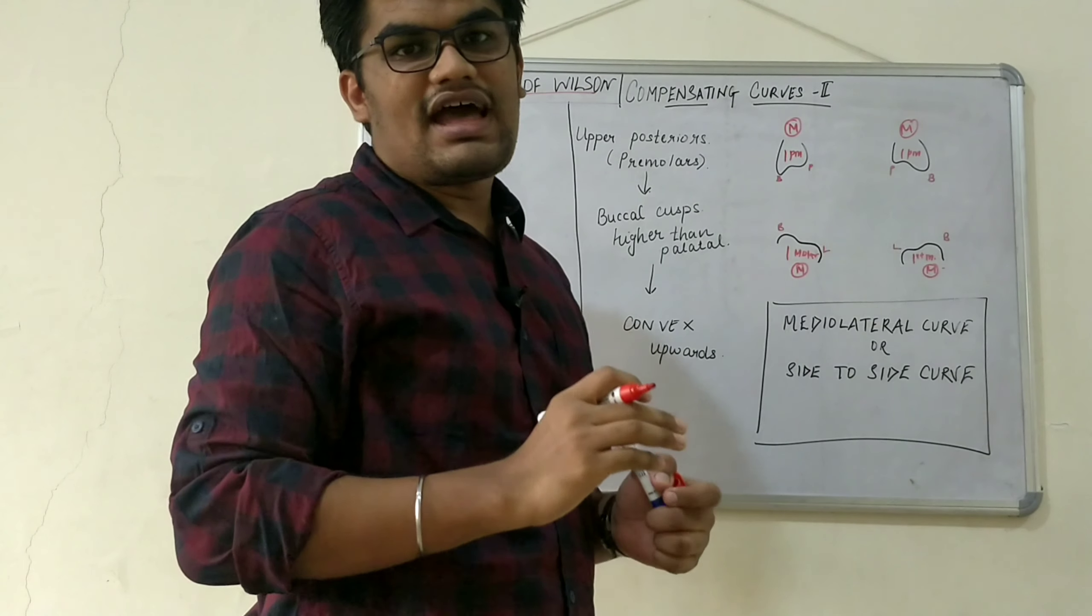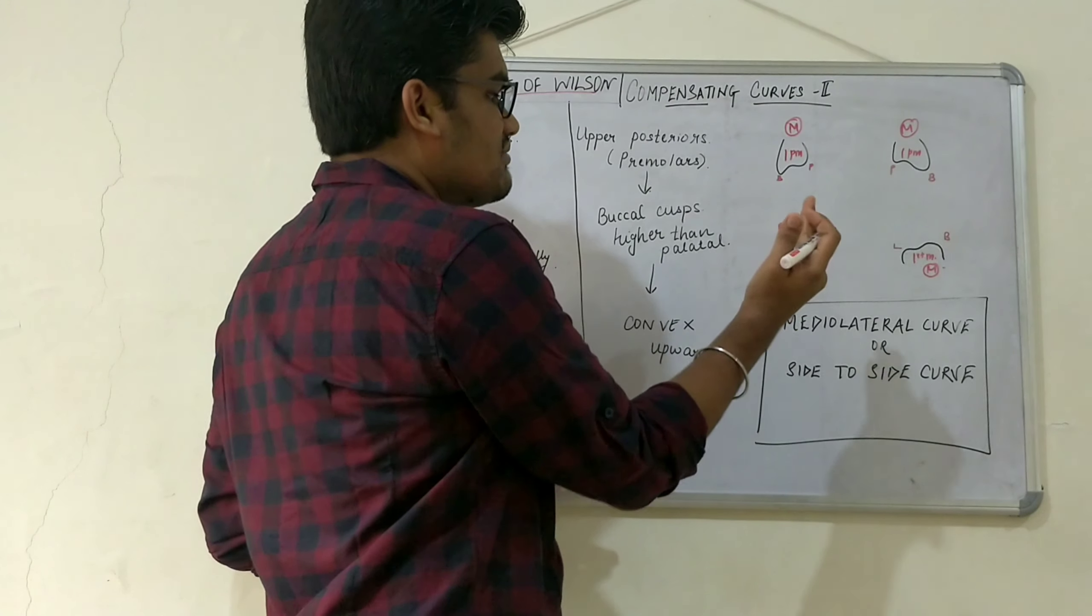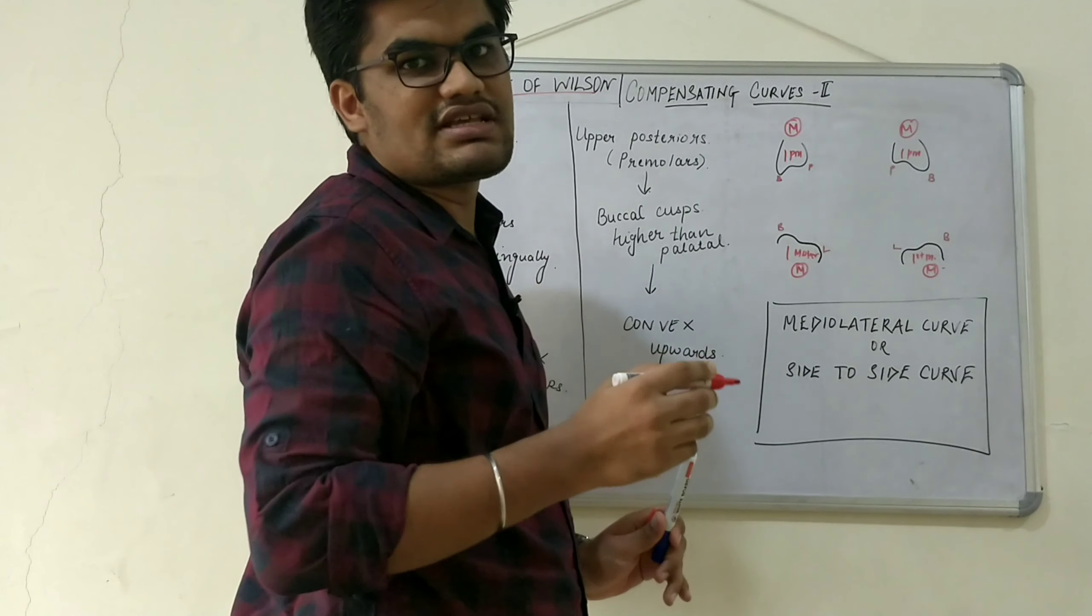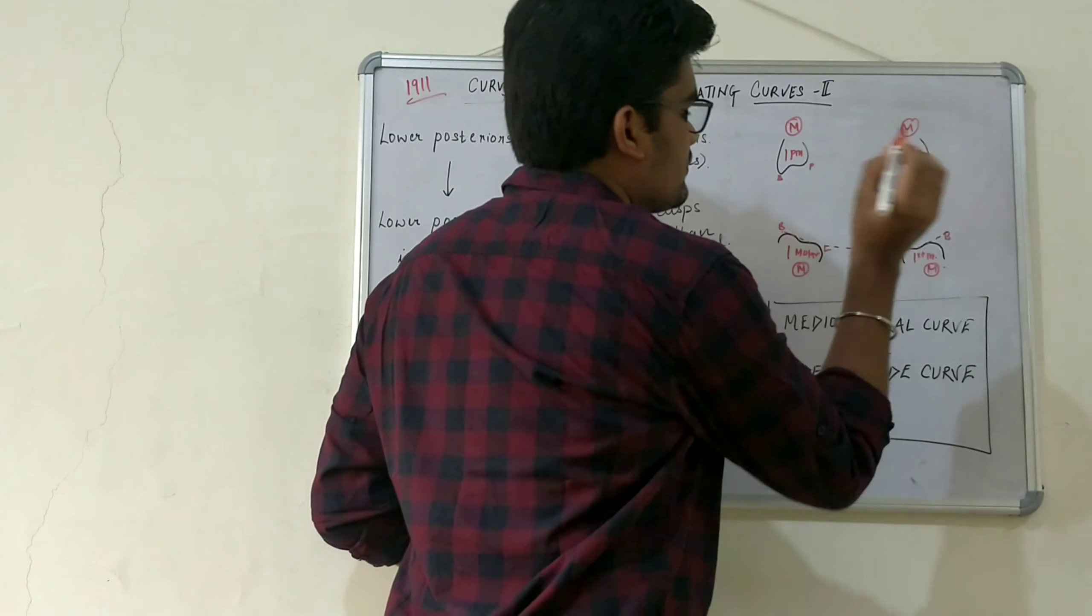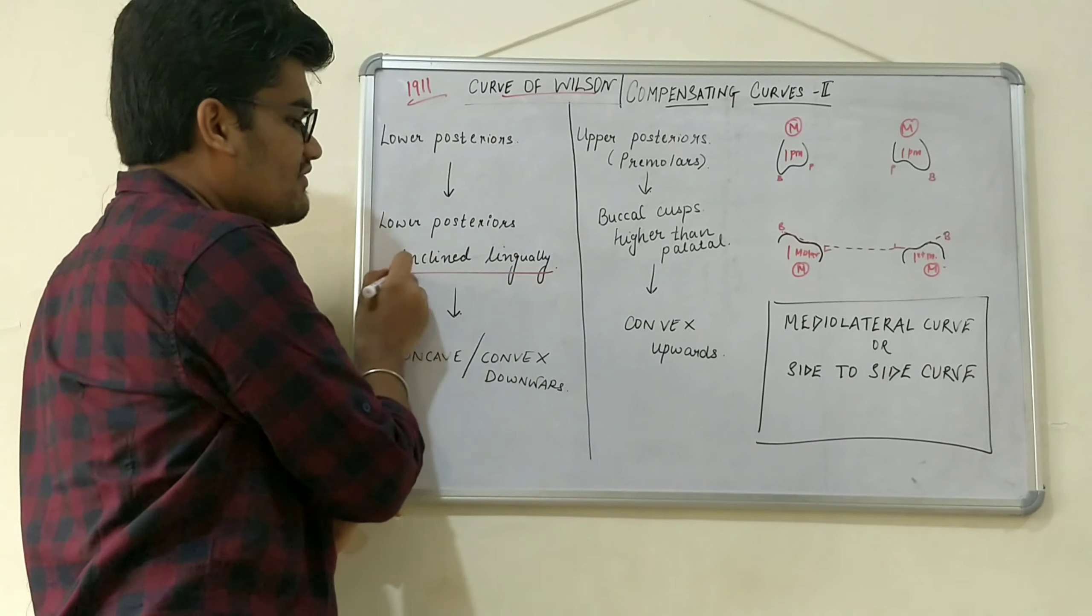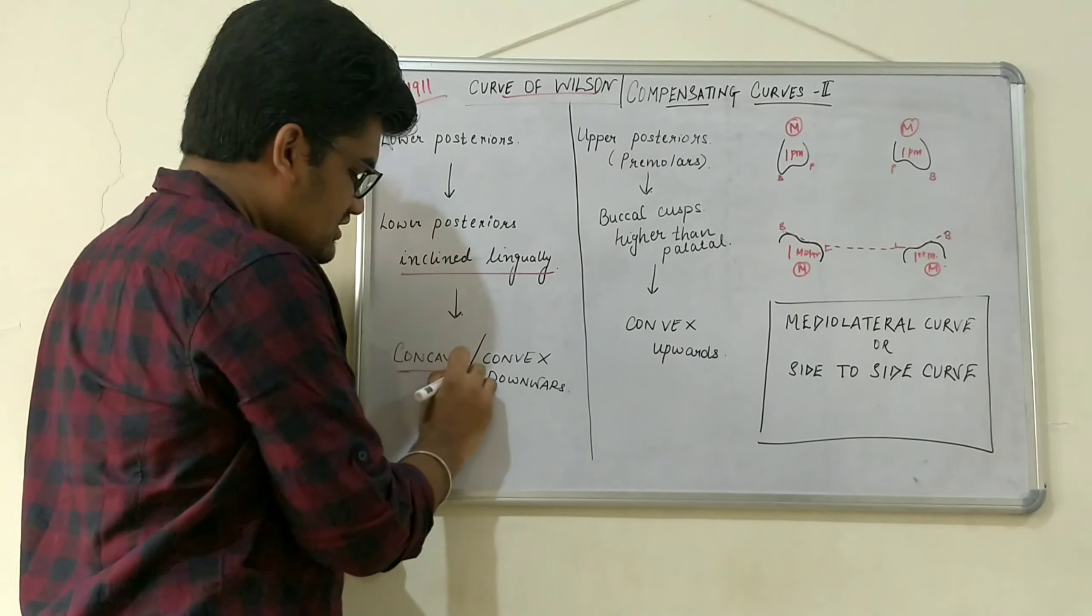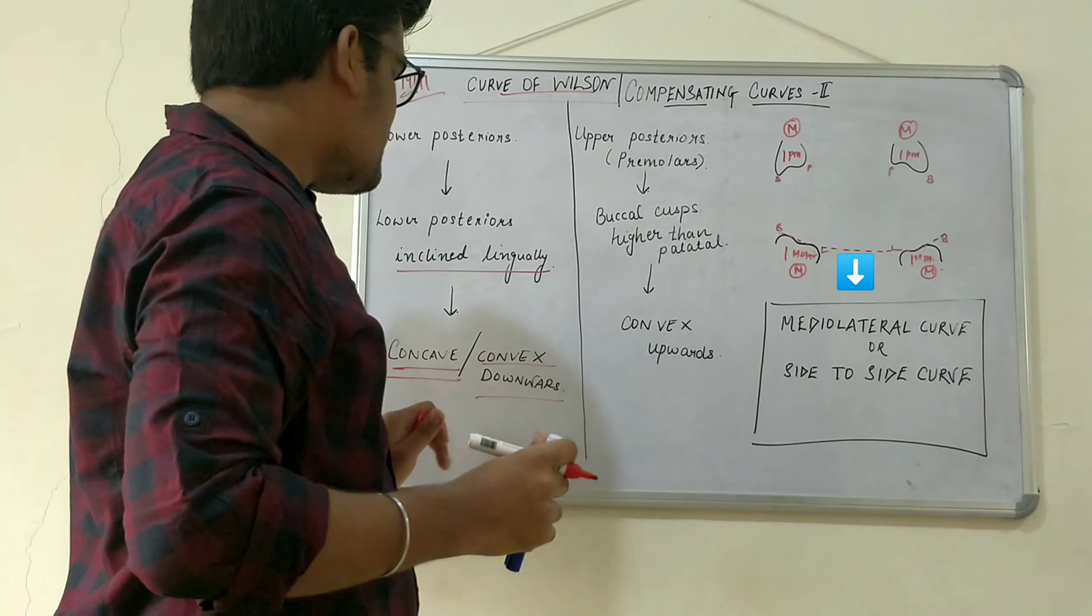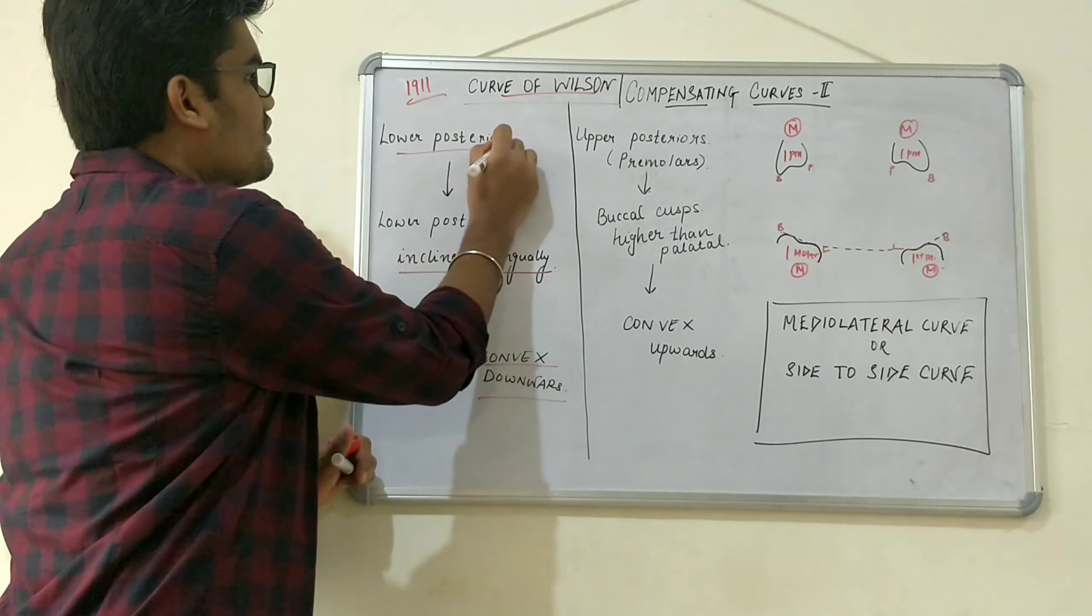Now we all know that the lower posterior teeth are slightly lingually inclined. If we see from the mesial view and draw a line touching the buccal and lingual cusps of both sides, we would get somewhat this shape. The lower posteriors are inclined lingually slightly, so we get something which is concave or convex downwards. This is the curve of Wilson for lower posteriors.